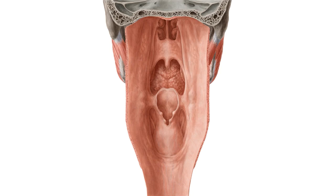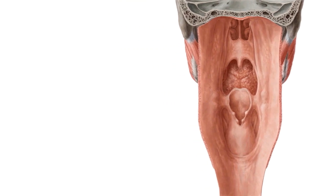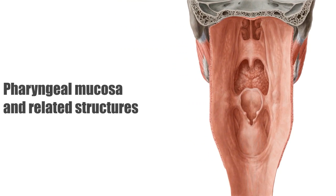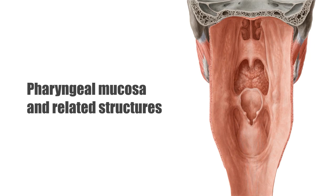The pharynx is also an important structure for production of voice and it's also a passageway for both food and air. As a reminder, we're going to be talking about the different pharyngeal mucosa — the structures of the pharyngeal mucosa and related structures associated to the pharyngeal mucosa.